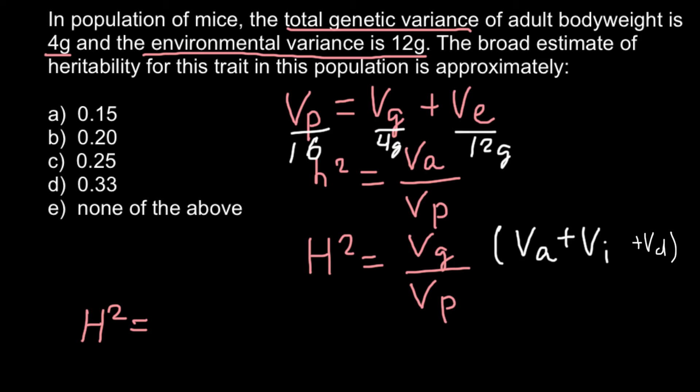4 grams divided by variance total phenotypic that is going to be 16. So 4 divided by 16, this is going to be 0.25, and this is going to be our answer today.